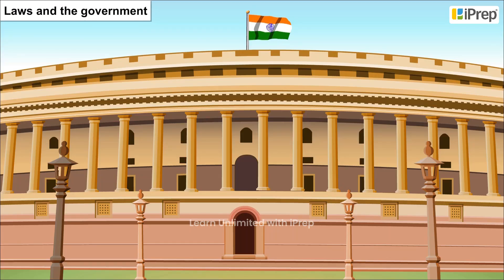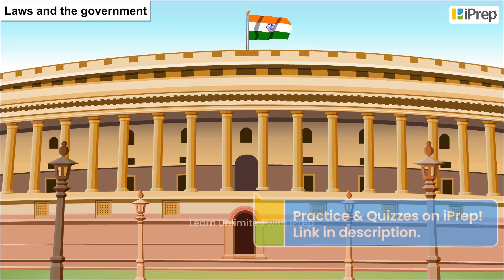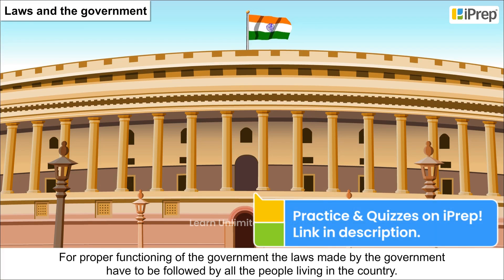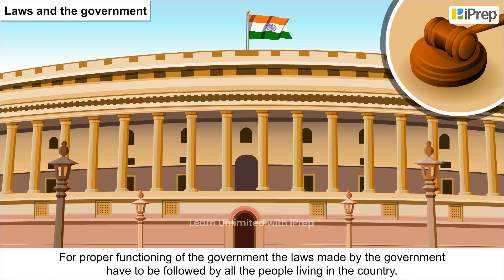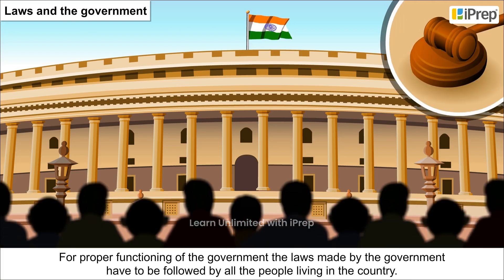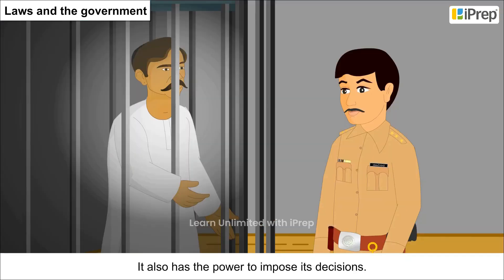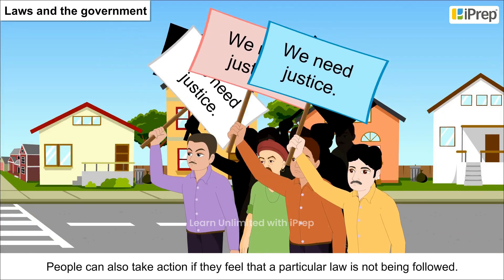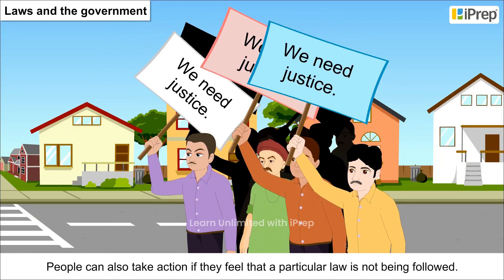Laws and the Government. For proper functioning of the government, the laws made by the government have to be followed by all the people living in the country. It also has the power to impose its decisions. People can also take action if they feel that a particular law is not being followed.